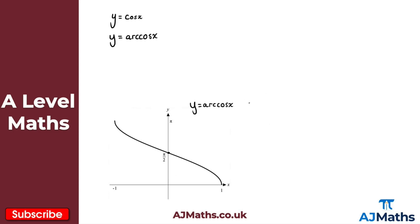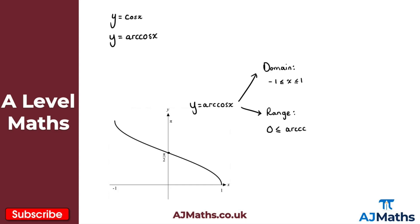We can also deduce the domain and range. For the domain, looking at our graph, this is between minus one and one — we do include those values. For the range, looking at our graph, we can see it must be between zero and pi, inclusive. Those are the key details we need for y equals arc cos x.